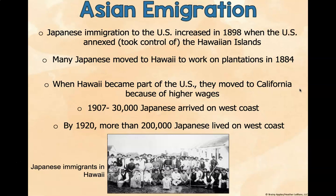Japanese immigration to the U.S. increased in 1898 when the U.S. annexed the Hawaiian Islands. Many Japanese moved to Hawaii to work on sugar cane plantations in 1884. When Hawaii became part of the United States, they moved to California because of higher wages. From 1907, 30,000 Japanese arrived on the West Coast, and by 1920, more than 200,000 Japanese families lived on the West Coast. This is a picture of Japanese immigrants living in Hawaii.